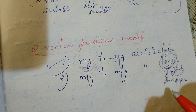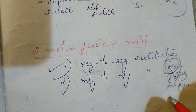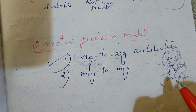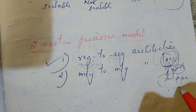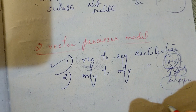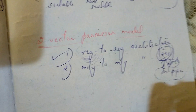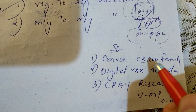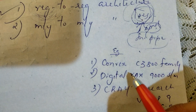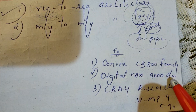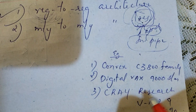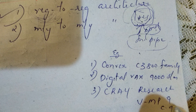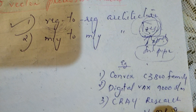We have functional pipelines and vector processors. Examples of vector computers include: Convex C3800 Family, Digital VAX 9006 System, Cray Research VMP and C90. These are examples of vector computers.